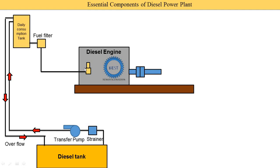The fuel injectors inject diesel into the diesel engine. In our body, the fuel is the food we eat — it has chemical energy. Similarly, diesel has chemical energy. This diesel supplied to the engine is converted into heat energy, and that heat energy is converted into mechanical energy using cylinders, pistons, connecting rods, and the crank. Our stomach is like the daily consumption tank — the main diesel tank is like our storage room where we store food and take what is needed daily.